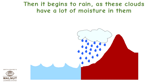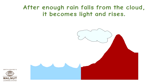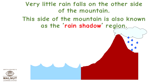Then it begins to rain, as these clouds have a lot of moisture in them. After enough rain falls from the cloud, it becomes light and rises. Very little rain falls on the other side of the mountain. This side of the mountain is also known as the rain shadow region.